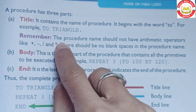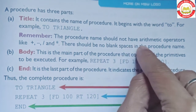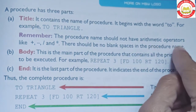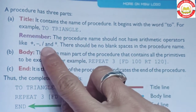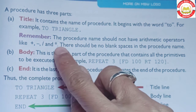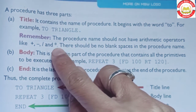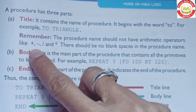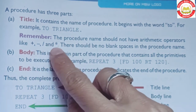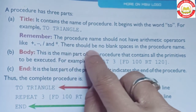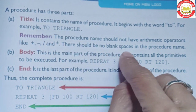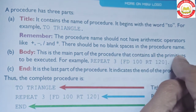Remember: the procedure name should not have arithmetic operators like plus, minus, slash, or star. Procedure name mein kisi bhi prakar ke arithmetic operators nahi hone chahiye — jaise plus, minus, slash, ya star. There should also be no blank space in the procedure name.